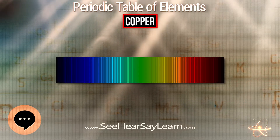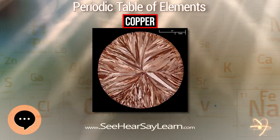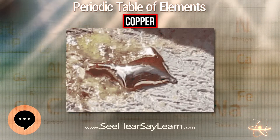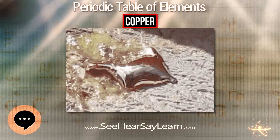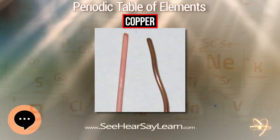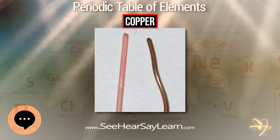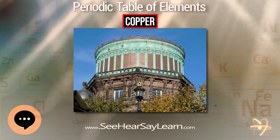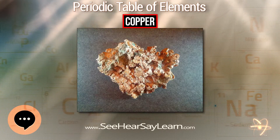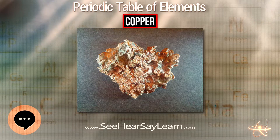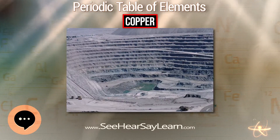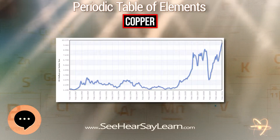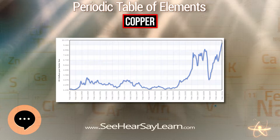Copper wire is used in power generation, power transmission, power distribution, electrical circuitry, and countless types of electrical equipment. Electrical wiring is the most important market for the copper industry, including structural power wiring, power distribution cable, appliance wire, communications cable, automotive wire and cable, and magnet wire. Roughly half of all copper mined is used for electrical wire and cable conductors.